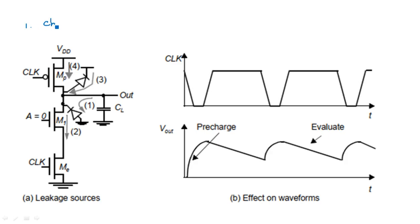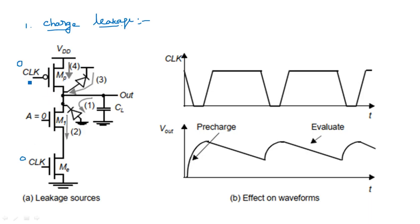The first issue is charge leakage. Assume a situation where the clock is equal to 0. When the clock equals 0, what happens is that the PMOS transistor — that is the MP transistor — comes into the ON state, and the ME evaluation transistor comes into the OFF state. With the MP transistor in the ON state, current flows from VDD to the capacitor CL, so the charging period begins and the capacitor charges.